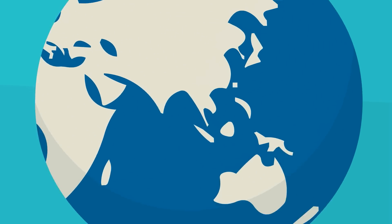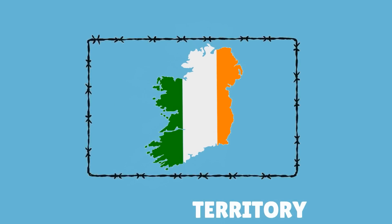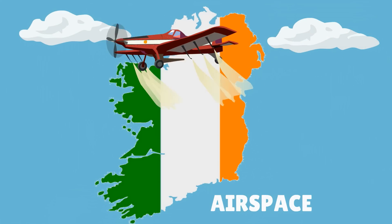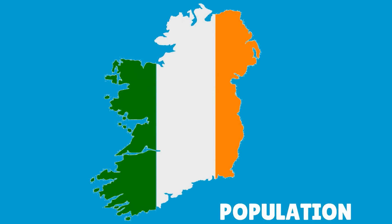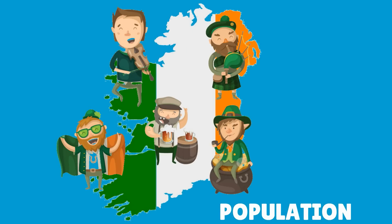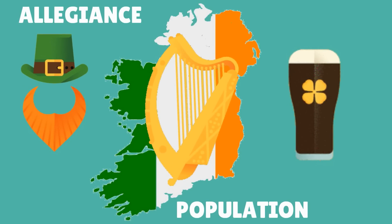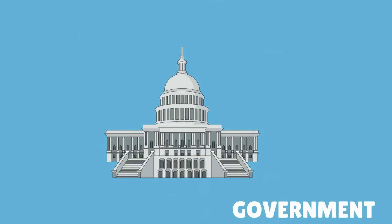First, the entity must have a defined territory, which covers the whole geographical area including the land, airspace, and the sea. Second, the territory has to be occupied by a population sharing a common allegiance, who permanently live and belong to the land.